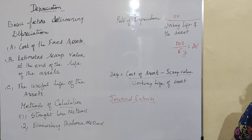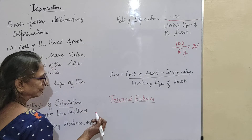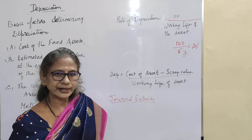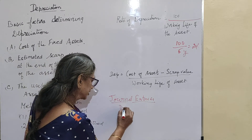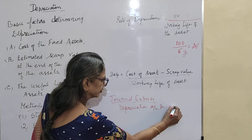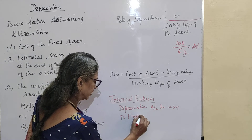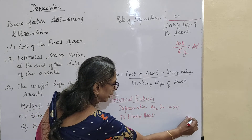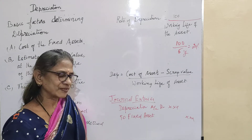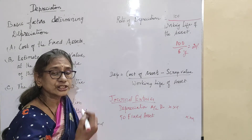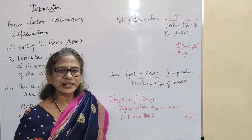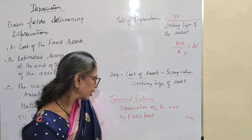After calculation, we need to pass journal entries and post them in the ledger account. When an asset increases in value it is on the debit side; when it decreases it is on the credit side. The journal entry for depreciation is: Depreciation Account debited to Fixed Assets Account. Fixed assets are credited because the asset's value is decreasing, and depreciation is debited because all expenses and losses — including this invisible loss of an asset — are debited according to the nominal account rule.